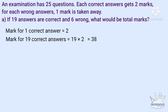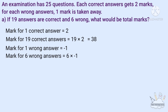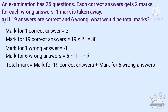1 wrong answer is equal to minus 1. Mark for 1 wrong answer is equal to minus 1. So total marks is equal to mark for 19 correct answers plus mark for 6 wrong answers, that is 38 plus minus 6. A positive 38 minus 6 gives 38 minus 6.